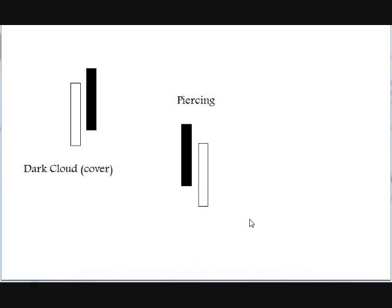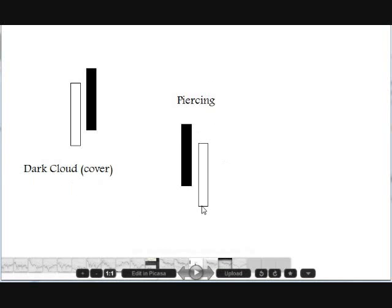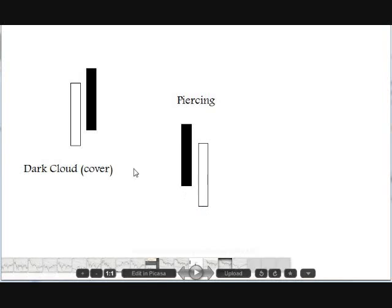Two candles we're going to look at today — two candle patterns, which means it takes two candles to make these patterns. The one on the left right here: dark cloud cover, or dark cloud as it'll be called. The technical term is dark cloud cover. And then the piercing candle. So these are two sets of candles.